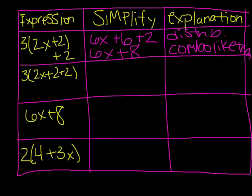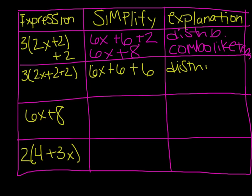Now let's look at the second expression: 3 times the quantity 2x plus 2 plus 2, where all terms are in the parentheses. So I distribute: 3 times 2x gives me 6x, plus 3 times 2 is 6, plus 3 times 2 is another 6 — because that second 2 is in the parentheses. That gives 6x plus 12. I used the distributive property first, then combined like terms.